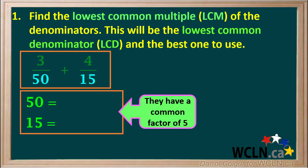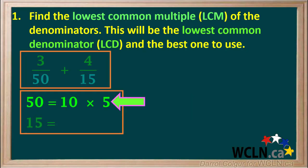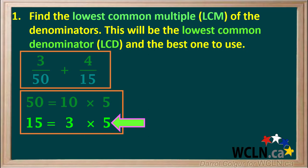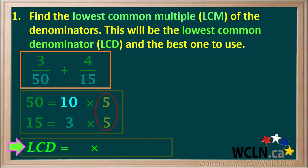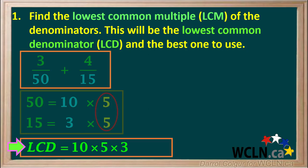We know that both 50 and 15 can be divided by 5. 50 is equal to 10 times 5, so we write this here. And 15 is equal to 3 times 5, so we write this here. Now we draw a circle around the two fives, the common factor of 50 and 15. To find the lowest common denominator, we multiply the 10, and only one of the two fives, and the 3. And the answer is 10 times 5 times 3 is equal to 150.